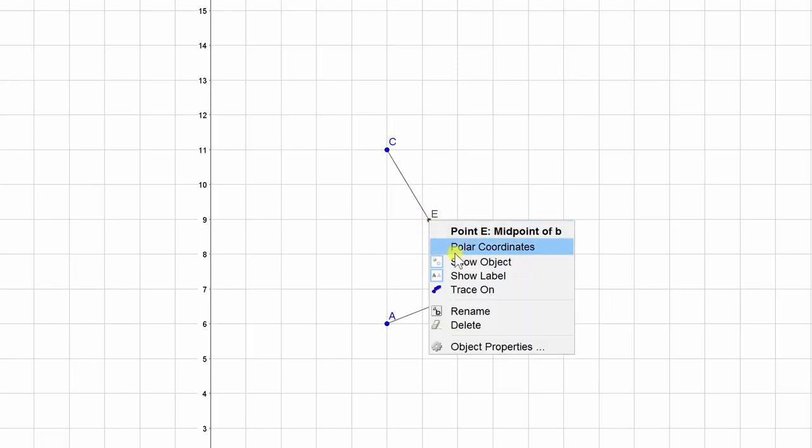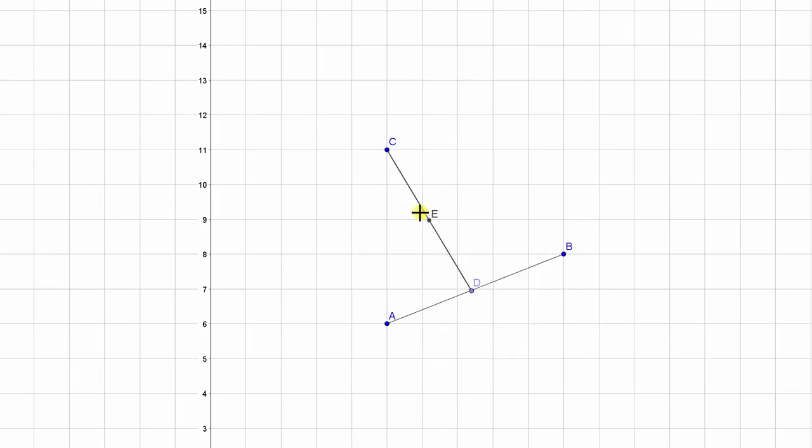You right-click and turn on the trace feature for this midpoint. With that trace feature, you can drag point D and start to see manually what's going to take place, the painting of the trace.